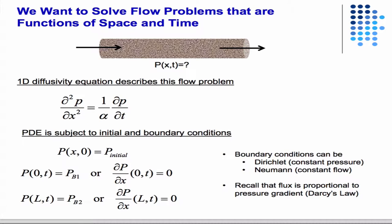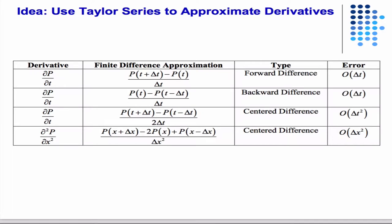Let me sort of review what we did with the implicit and explicit methods. We have this continuous equation, and we're going to substitute in our finite difference approximations.